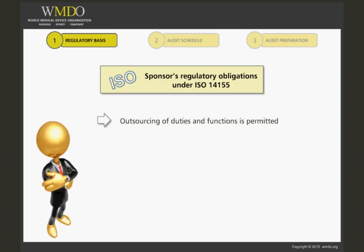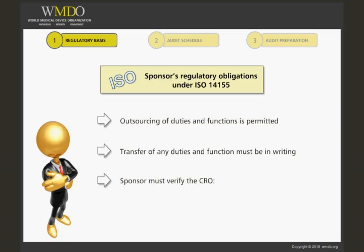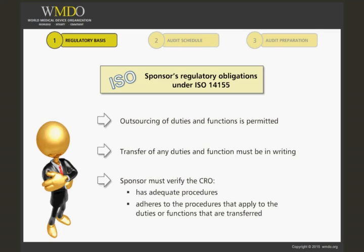The ISO standards also say that the transfer of any duty or function must be in writing. Before the sponsor transfers functions to a CRO, the sponsor must verify that the CRO has adequate procedures and adheres to the procedures that apply to the duties or functions being transferred. This last requirement gives sponsors the responsibility to audit a CRO before any transfer of functions or duties occurs.